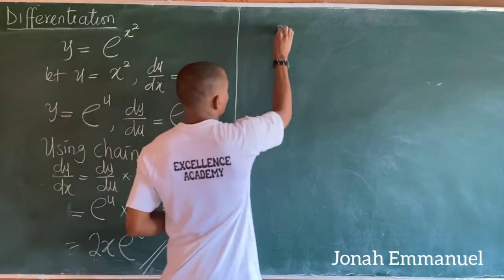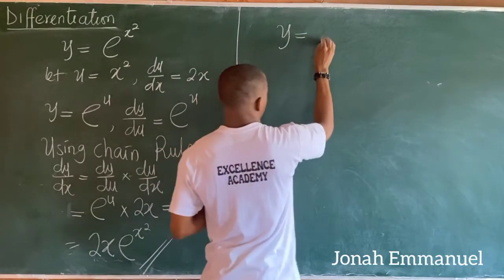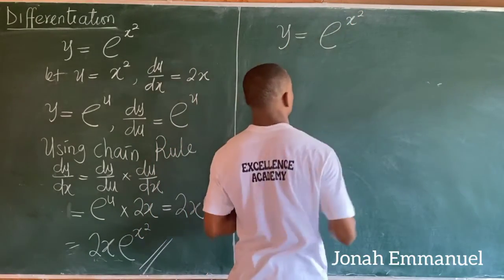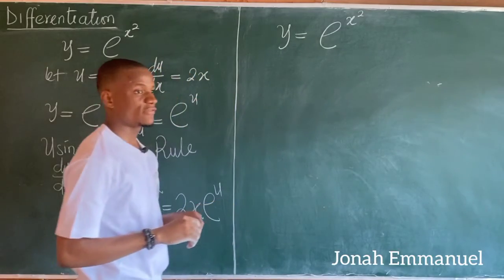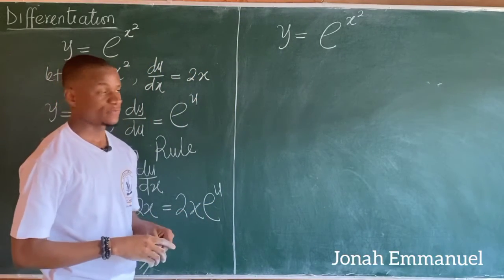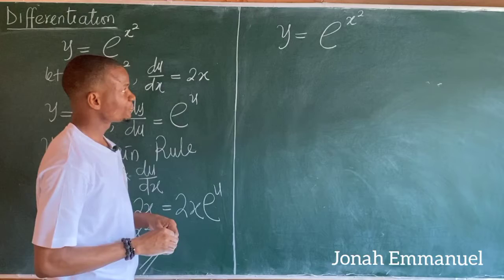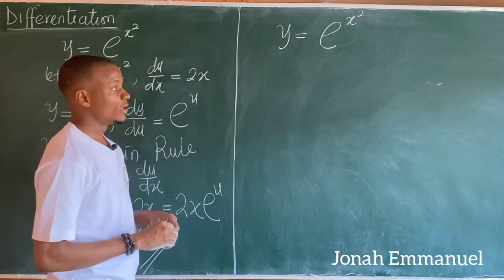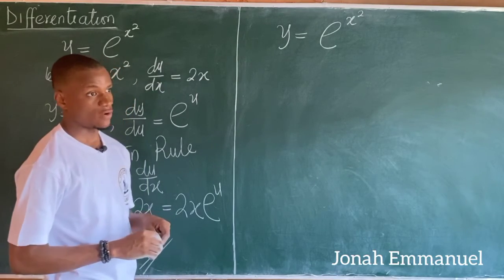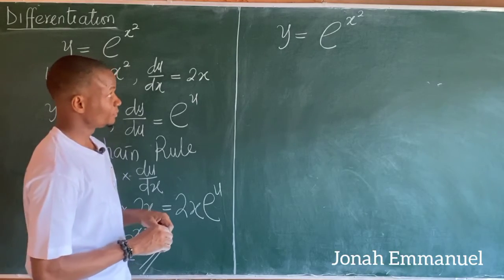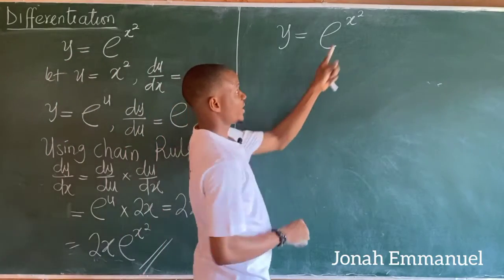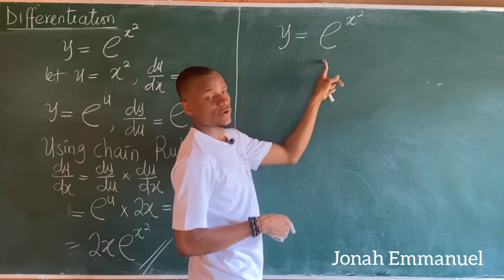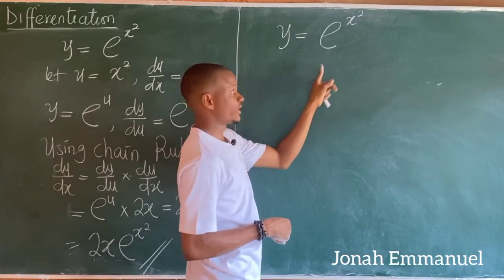So if I'm having this now, is there a shorter method of solving this? Yes, there is. What's the shortcut to differentiation of exponential functions? Here's what to do. If I'm to differentiate an exponential function in a very fast way, you pick out the index, differentiate the index, and attach it to the question. That's the shortcut.